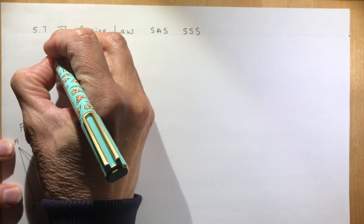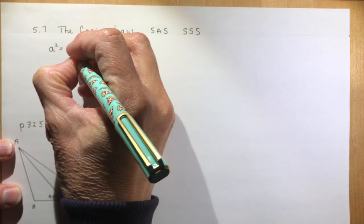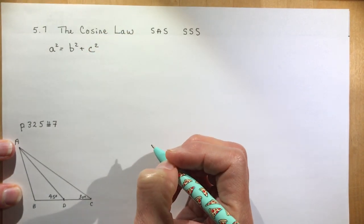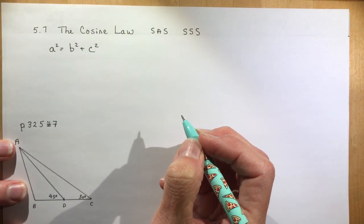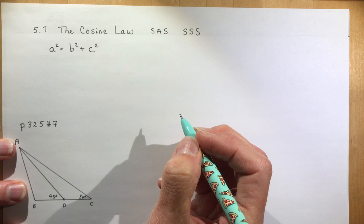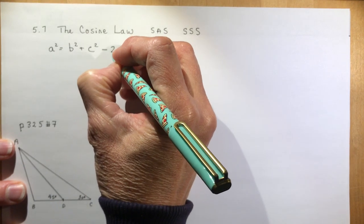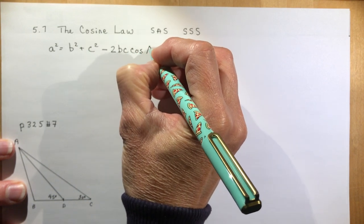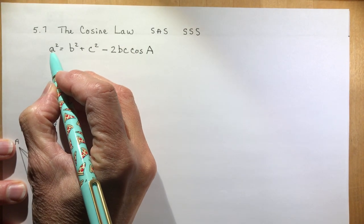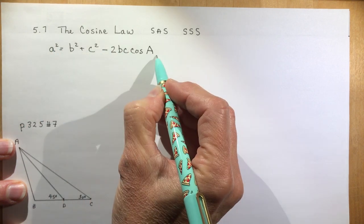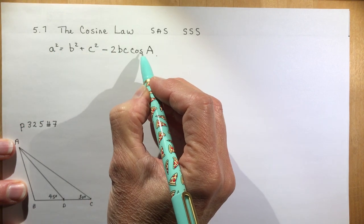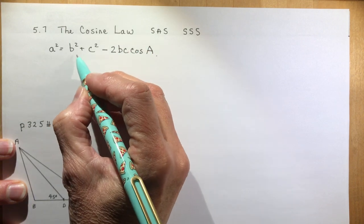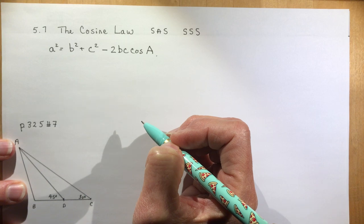Now the formula that you may remember starts with a Pythagorean relationship: A squared equals B squared plus C squared. Everyone knows that — you learned it in grade 9. And then you subtract 2BC times the cosine of the angle that matches the side length you started with. So A and the angle A have to match. Now if the angle was 90 degrees, this term would become zero and you're back to the Pythagorean relationship. Isn't that magical?